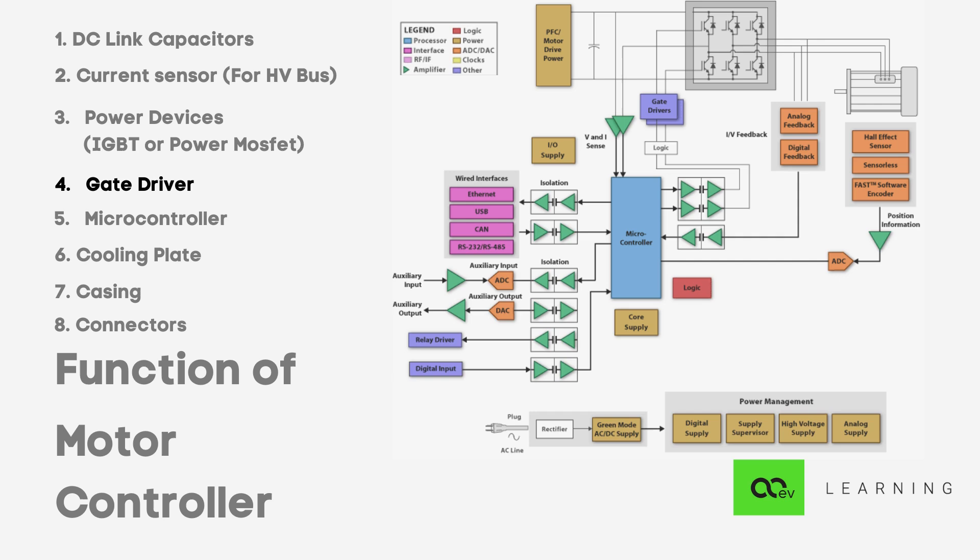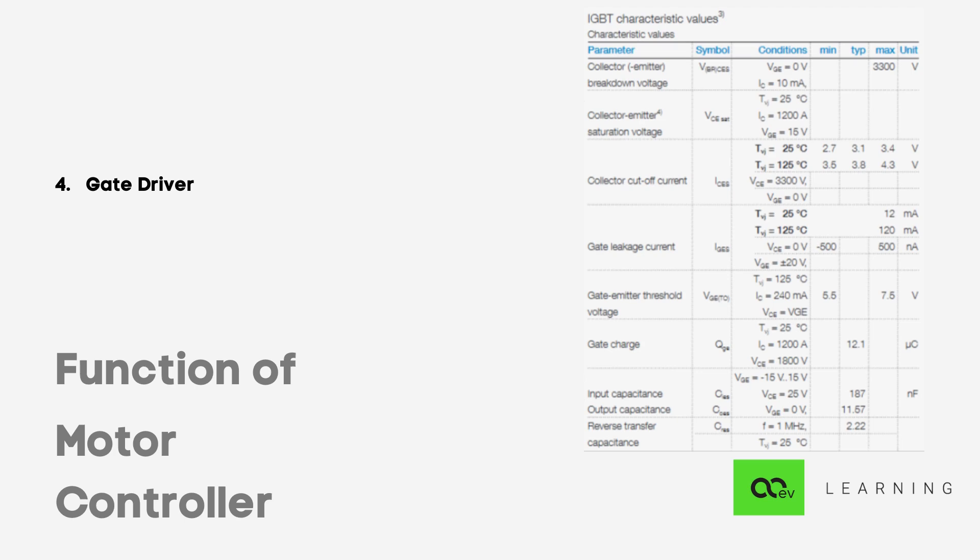Now look at the characteristic values of the same IGBTs we discussed earlier. If we can see the gate-emitter threshold voltage, it ranges from 5.5V to 7.5V. Most microcontrollers or digital signal processors work at 3.3V or 5V logic levels.